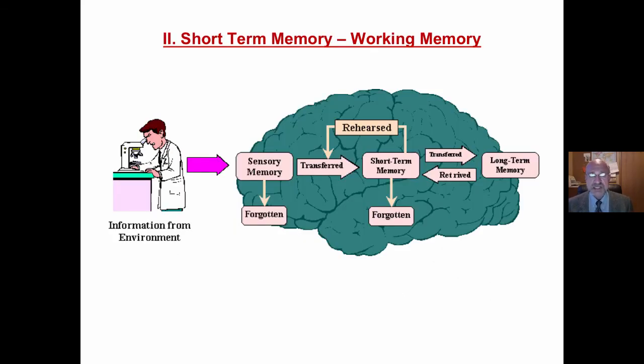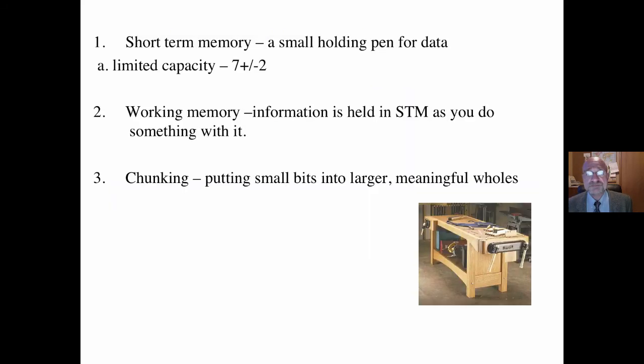The second part is short-term memory, a little bit different than working memory. Short-term memory essentially is a holding pen for data, sense data and other data. It has a limited capacity, plus or minus two. That means we can hold about seven bits of information. Some people can hold five. Some people can hold nine. That's the plus or minus. For about 15 seconds. So a smaller duration, smaller capacity.